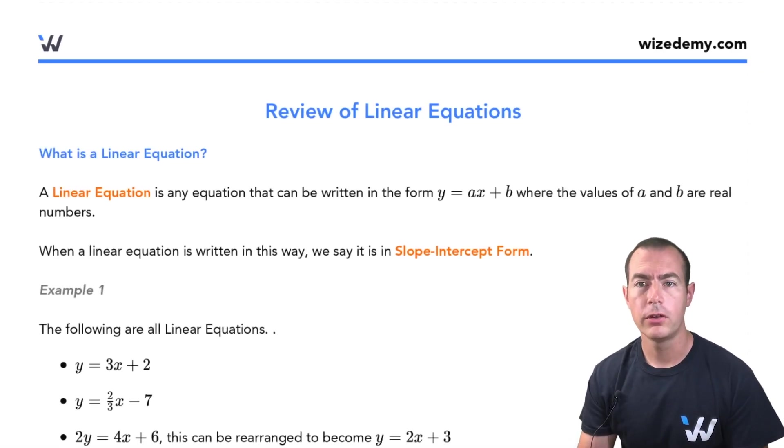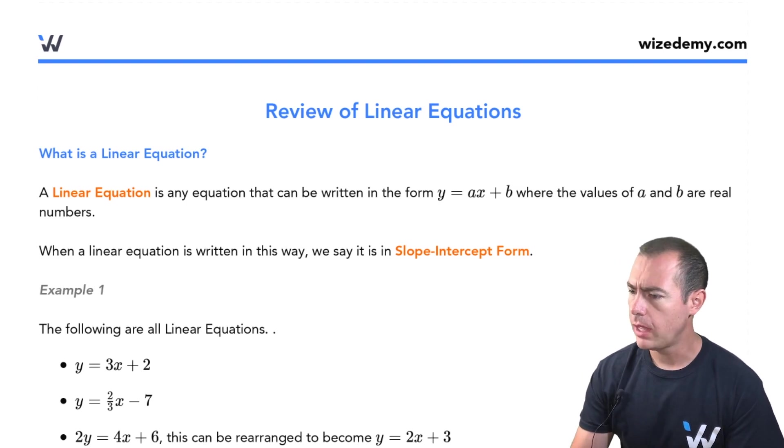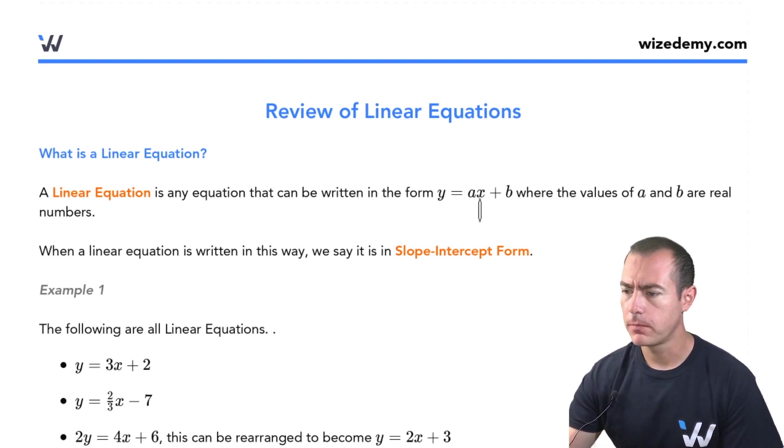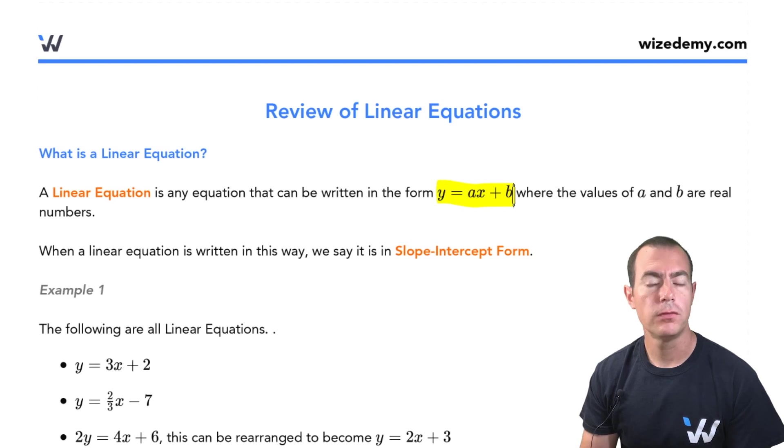Alright, we're going to do a quick review of linear equations and some of their properties. So first and foremost, a linear equation is really just any equation of the proper form, and the form I'm talking about is y equals ax plus b. Now we're assuming that those values for a and b are real, but really what we're saying is as long as you can take an equation and put it into that form, you know that it is a linear equation.